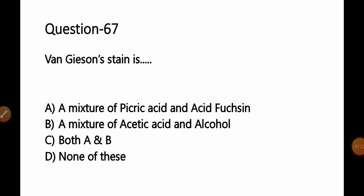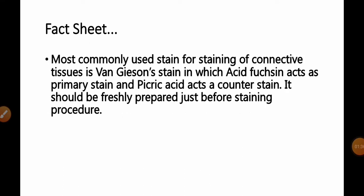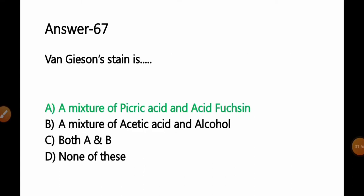Question number 67: Van Gesson stain is — Option A: a mixture of picric acid and acid fuchsin; B: a mixture of acetic acid and alcohol; C: both A and B; D: none of these. As already discussed, Van Gesson stain is a mixture of acid fuchsin as a primary stain and picric acid as a counter stain. It should be prepared freshly just before the staining procedure. So Option A is the correct answer.